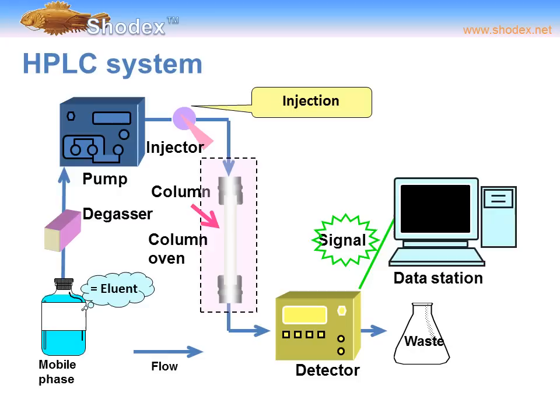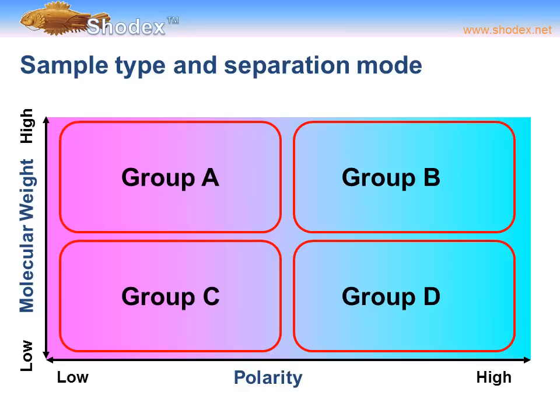After the pump, the eluent moves past the injector port and into the column, then into a detector where a signal is taken and then into the waste stream. The analytes themselves are injected at the injector port. The eluent carries the analytes into the column, and based on physical, chemical, or both types of interactions between the stationary phase, the analytes, and the mobile phase, the analytes are separated as they move through the column. Afterwards, the signal is taken from the detector and moved into a data station where the analyst can identify the analytes.